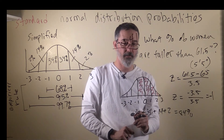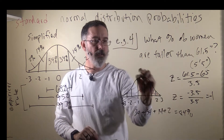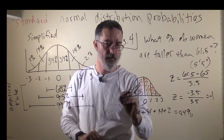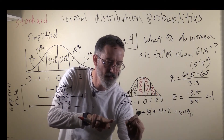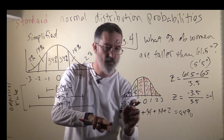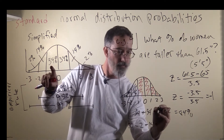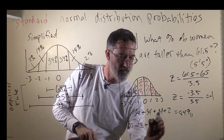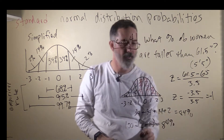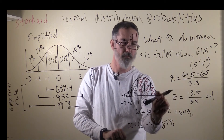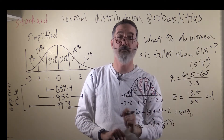Notice there is another way you could have solved this. Since this area all adds up to 100, what you could have done is calculated the area on the other side and subtracted it from 100. So 100 minus 16 is also 84%. So those are two different ways to calculate the 84% of women who are taller than a z-score of negative 1, or equivalently, the 84% of women that are taller than 5 foot 5 inches.